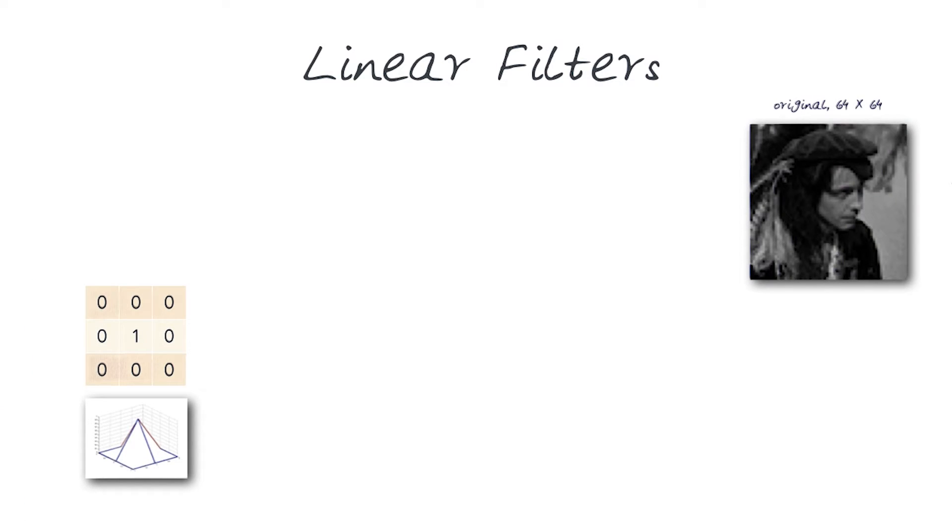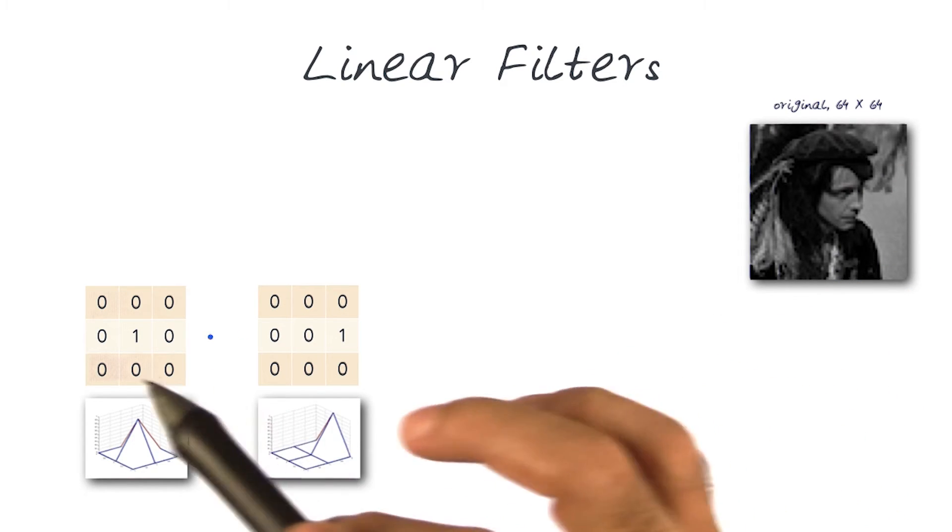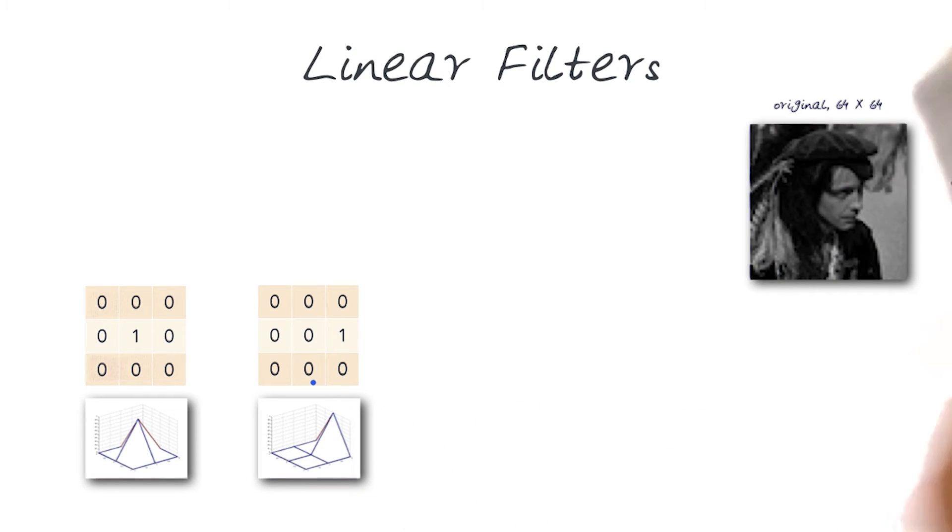Let's apply a simple kernel here, just a simple identity. What do you expect the output to be? Next one we can apply where there is not just the identity but now we have shifted this by one. What should the output be?